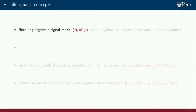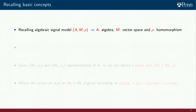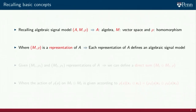We start recalling that an algebraic model is a triplet A, M, Rho, where A is an algebra, M is a vector space, and Rho is a homomorphism. The pair M, Rho is a representation of the algebra A. We highlight in particular that each representation of an algebra defines an algebraic signal model.